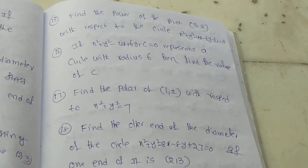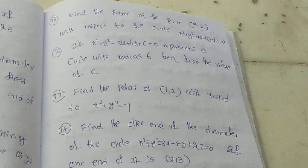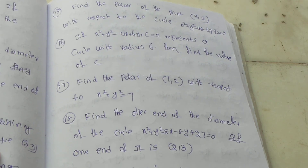Fifteenth question: Find the power of the point (3, 2) with respect to the circle x square plus y square minus 4x minus 6y minus 12 equal to 0.